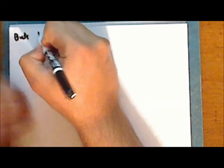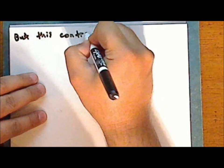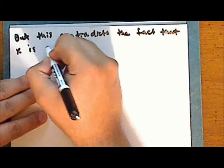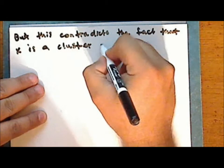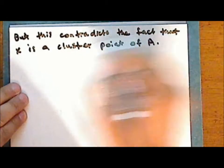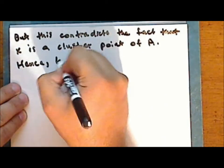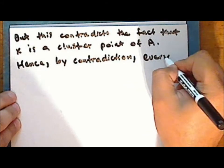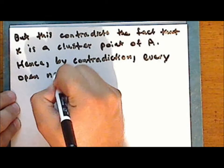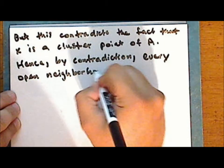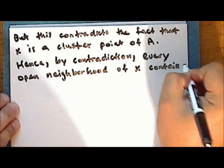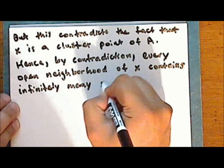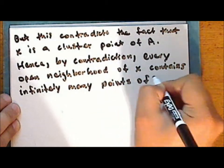Such that the intersection of this neighborhood with the complement of the singleton containing the point X in the set A is empty. But this contradicts the fact that the point X is a cluster point of the set A. And hence by contradiction, every open neighborhood of the point X contains infinitely many points of the set A.